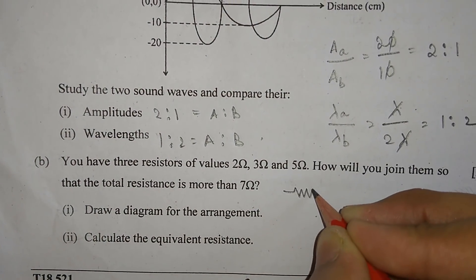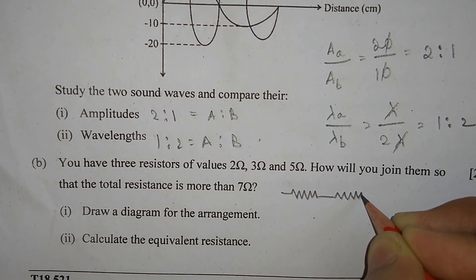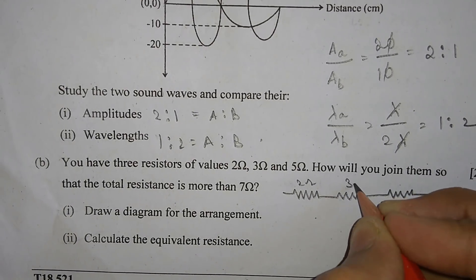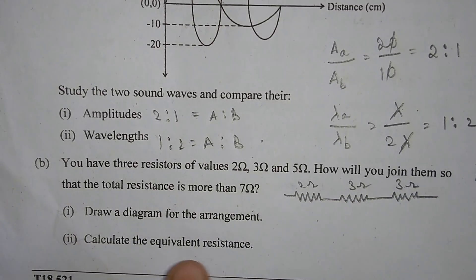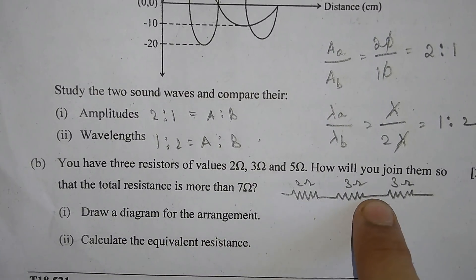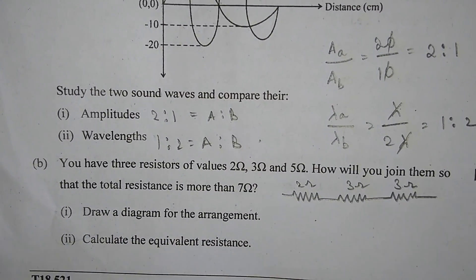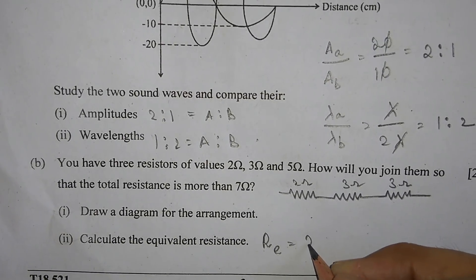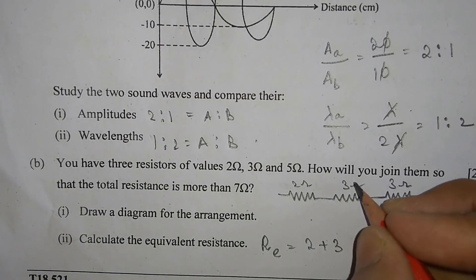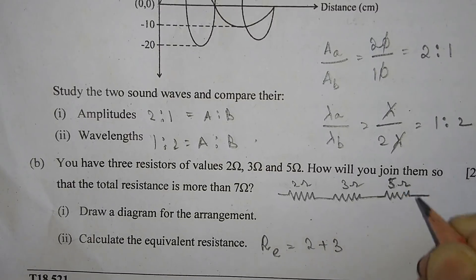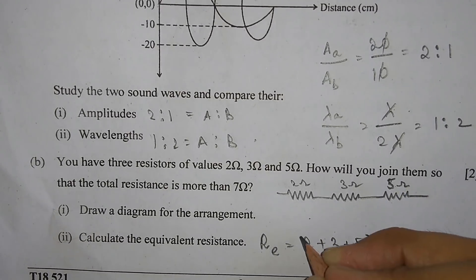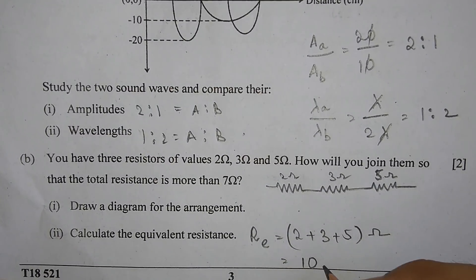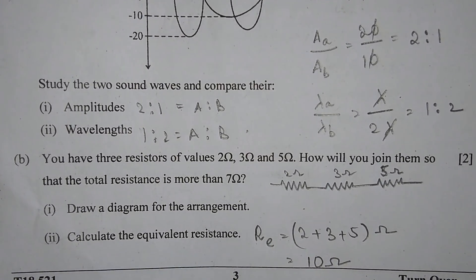You can simply connect the 3 ohm and 5 ohm resistors. The equivalent resistance equals 2 + 3 = 5 ohm. So the equivalent resistance is 5 ohm.